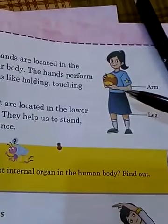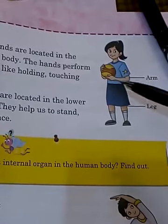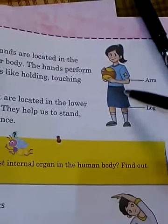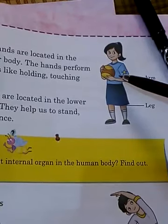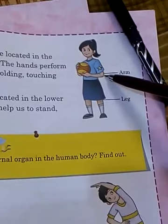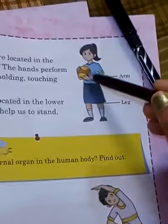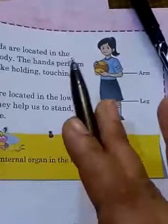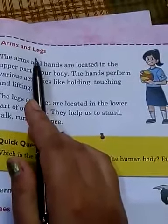Now I am going to repeat the same things so it will be very clear. The arms have parts: this is called the upper arm, this is the forearm, this is the elbow, then the palm, thumb, and fingers. These are the parts of our arms, and arms and legs are very important external parts of our body that help us do many kinds of things.